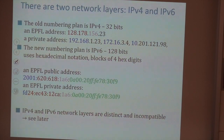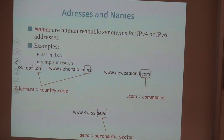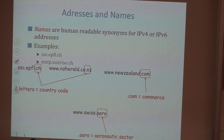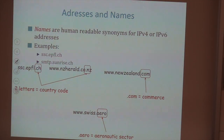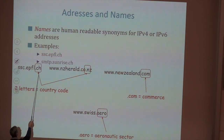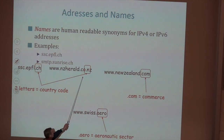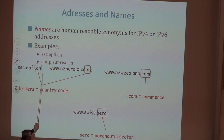When we interact with the internet, we usually use names more than addresses. Names are human-readable synonyms for addresses. For example, a name like ssc.epfl.ch is equivalent in some sense to the IP address of the web server for SSC. Names are structured — they go from the more specific to the more general. Two-letter acronyms mean countries: NZ for New Zealand, CH for Switzerland, CO for Colombia. Three-letter acronyms are the original country-independent domains, like .com. The internet was originally a non-profit network, so there was .com, .net for network, .org for non-profit organizations.